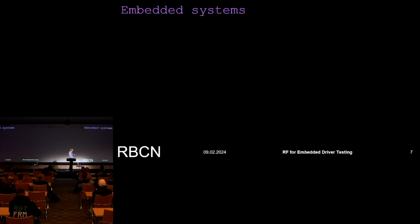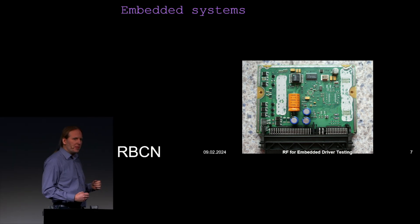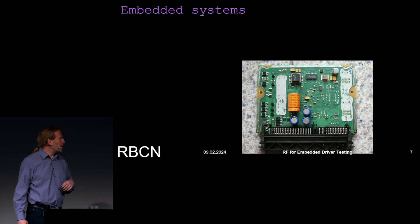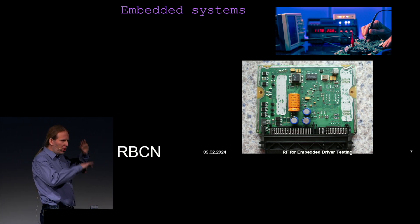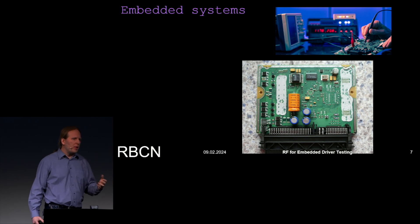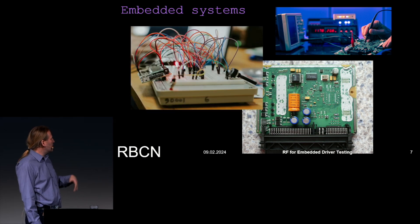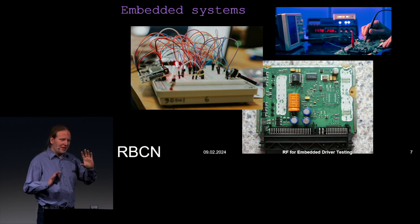What is an embedded system? For those who don't know, the coffee machine outside is an embedded system — there is a microcontroller inside. When developing such a thing, it usually needs some external equipment: oscilloscopes, logic analyzers, generators — a lot of expensive stuff. Each developer cannot have all of it on their desk.